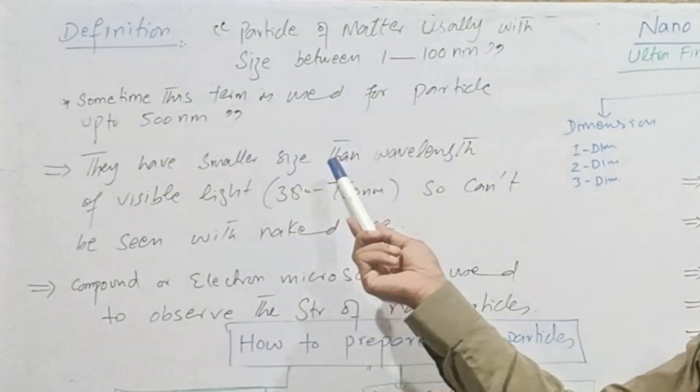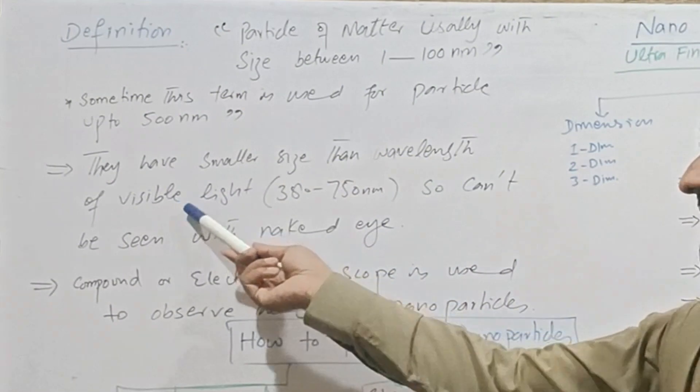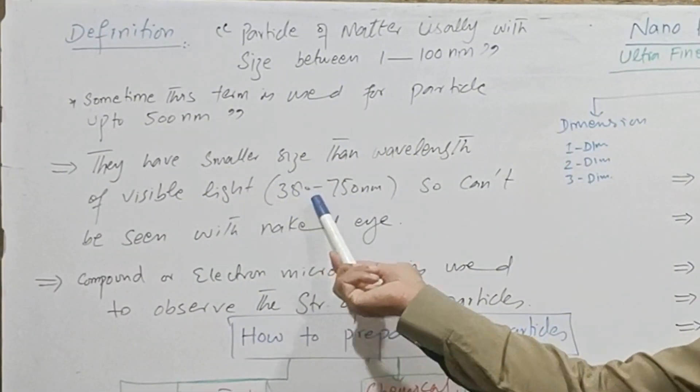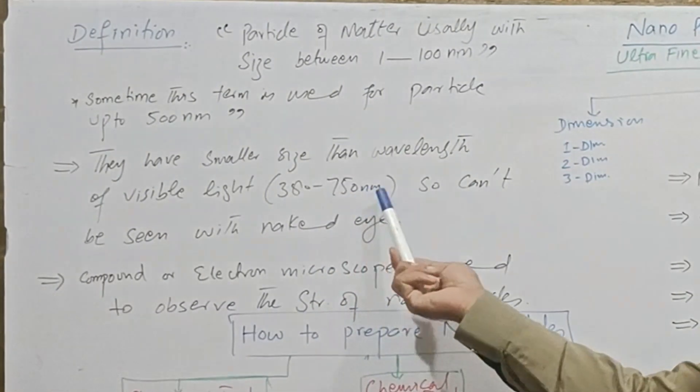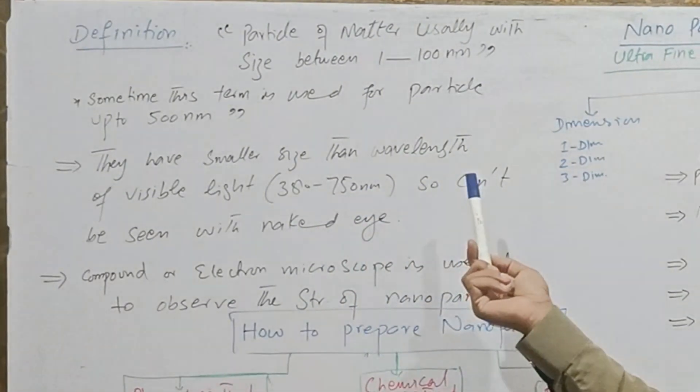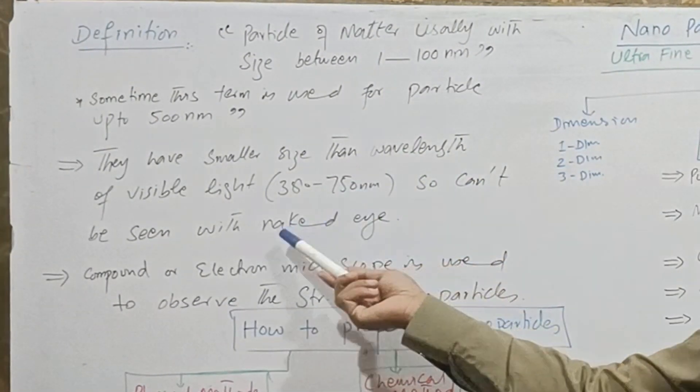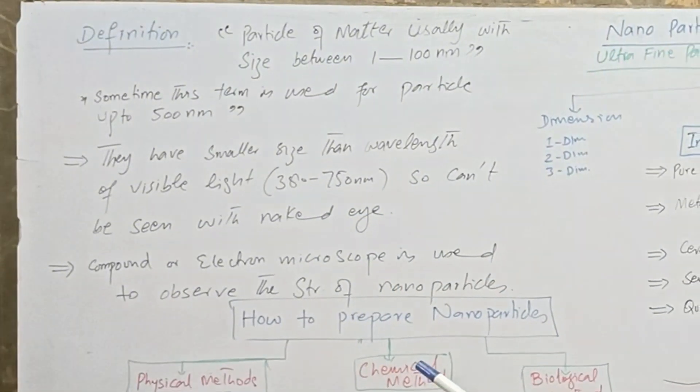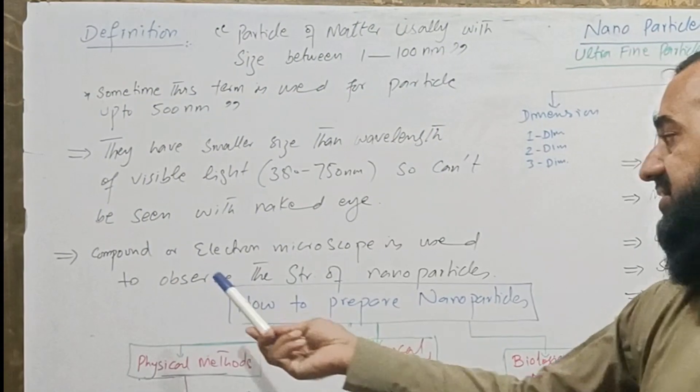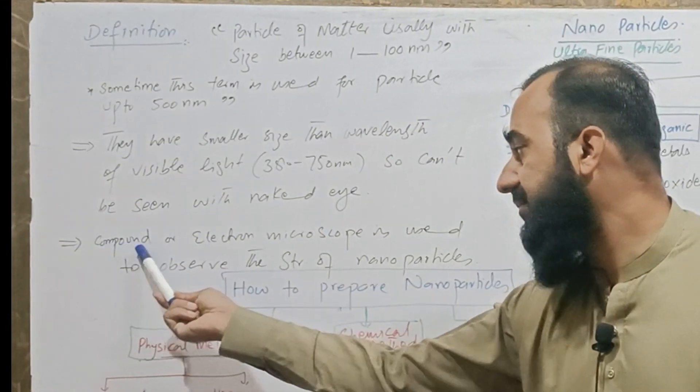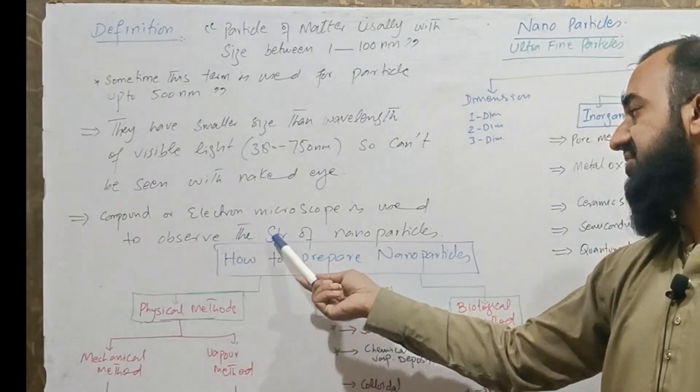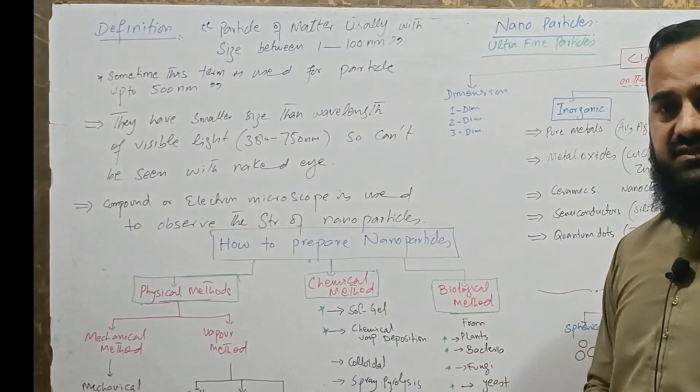Nanoparticles have smaller size than the wavelength of visible light, which is larger than that of nanoparticles, so we cannot see nanoparticles with the naked eye. In order to observe nanoparticles, we can use light microscope, compound microscope, or electron microscope to observe the structure of nanoparticles.